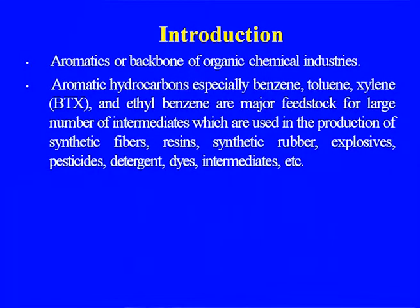The aromatic hydrocarbons — especially benzene, toluene, xylene (BTX) and ethyl benzene — are major feedstocks for a large number of intermediates used in synthetic fiber production. Benzene is used to produce cyclohexane, cyclohexane to caprolactam; para xylene to purified terephthalic acid (TPA) or DMT. Polystyrene resins, synthetic rubber (SBR), and explosives like TNT played important roles during World War I and II.